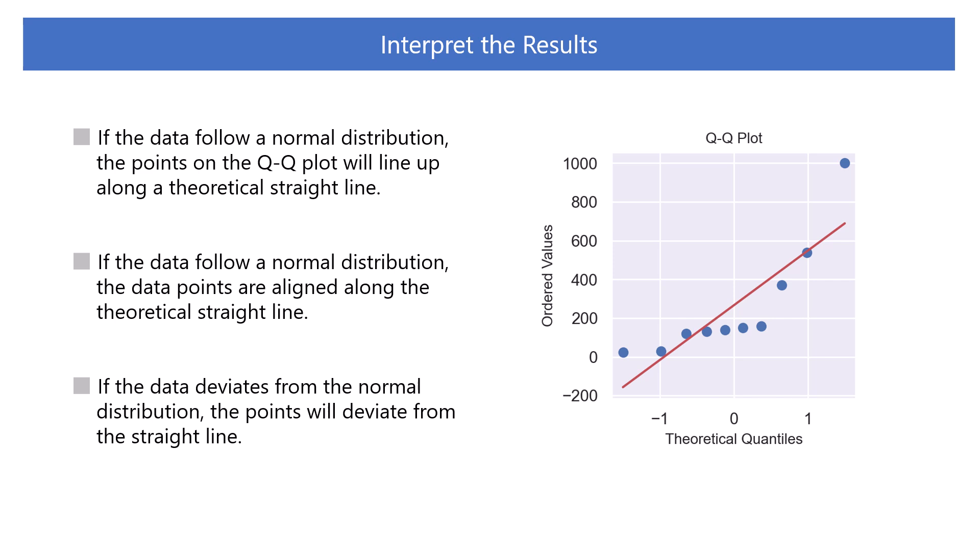In this case, one of the data points with a large value widely deviates from the straight line. Therefore, it is possible to consider this data point as an outlier.